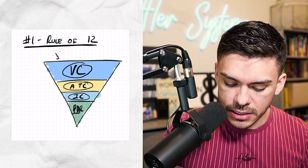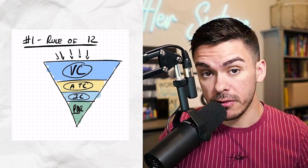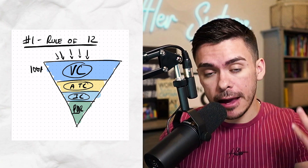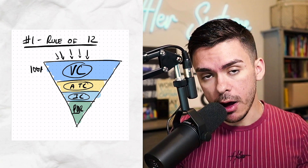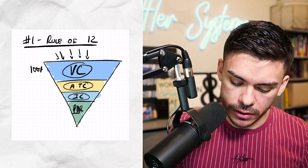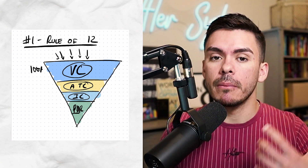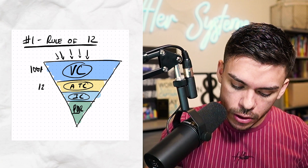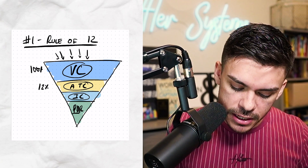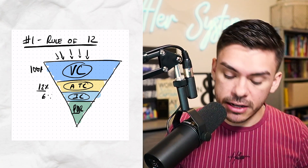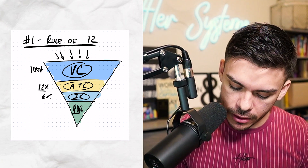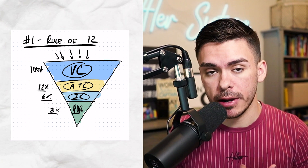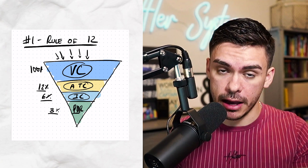A hundred percent of people are going to see the view content — this is the traffic we're driving from whatever our traffic source is. Using the Rule of 12, we determine our baseline conversion. We're looking for 12% of people to add to cart, then 6% to initiate checkout — cut in half — and then 3% to purchase, cut in half again. That is the general baseline you should be looking at for your conversion rate.